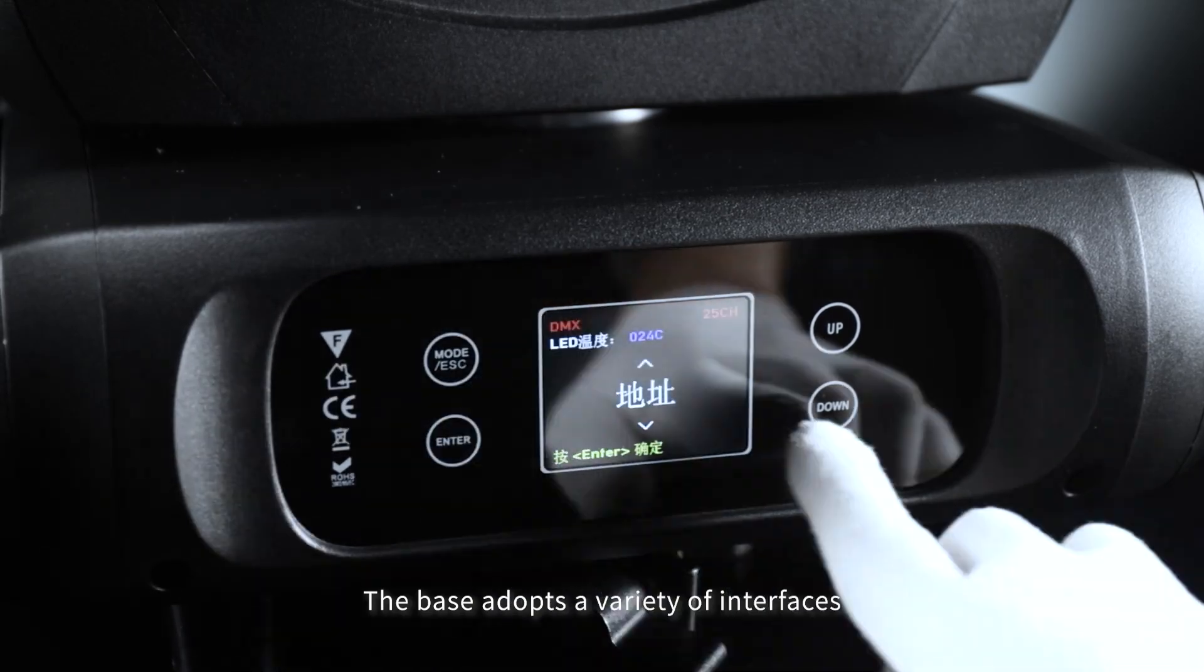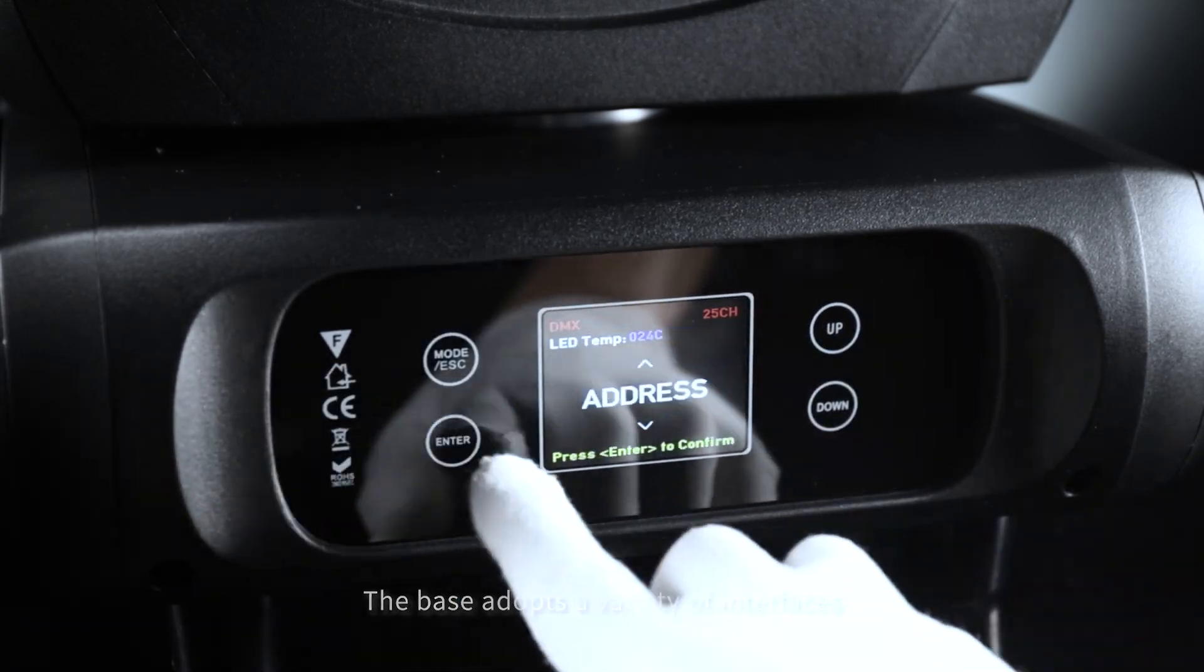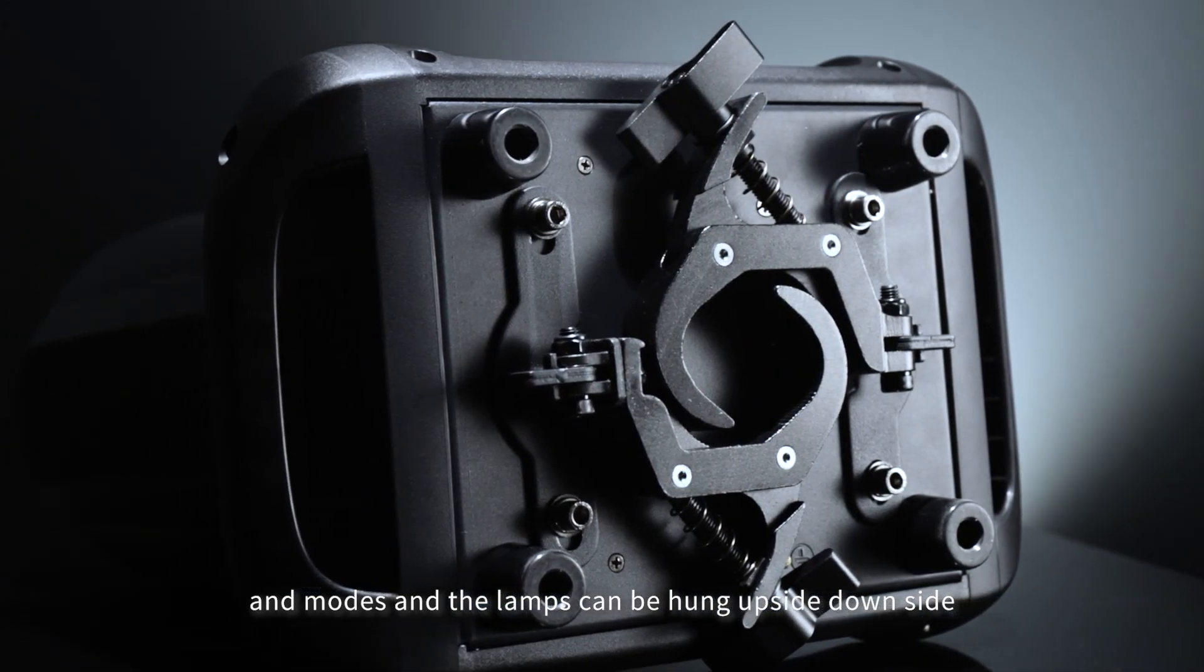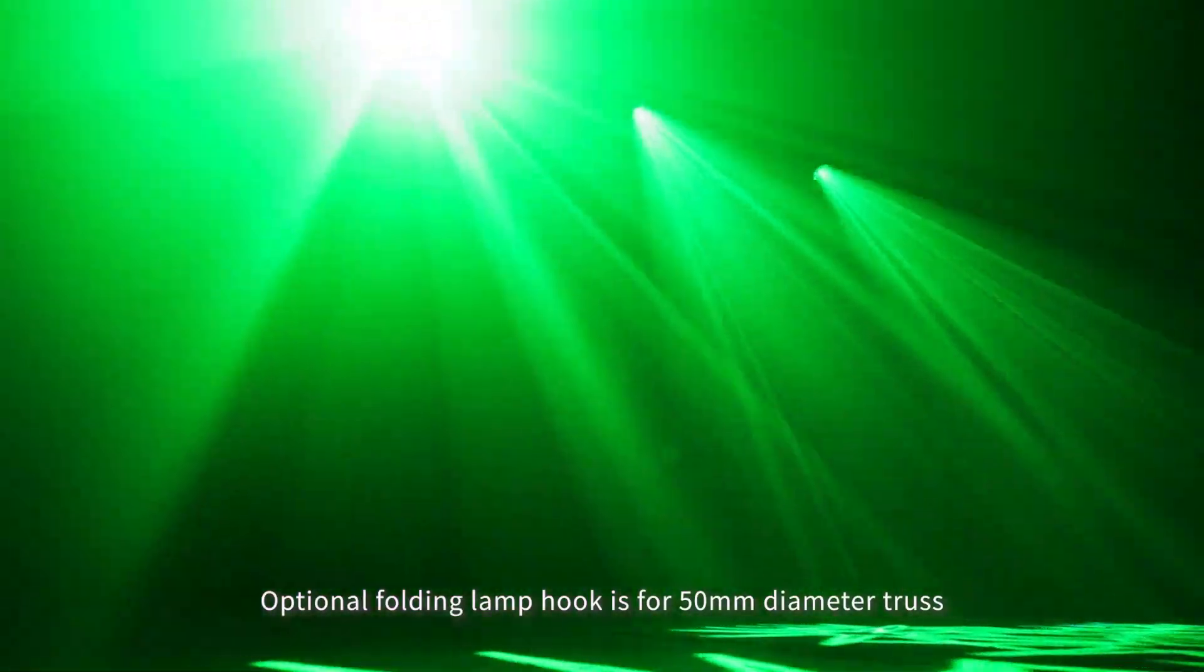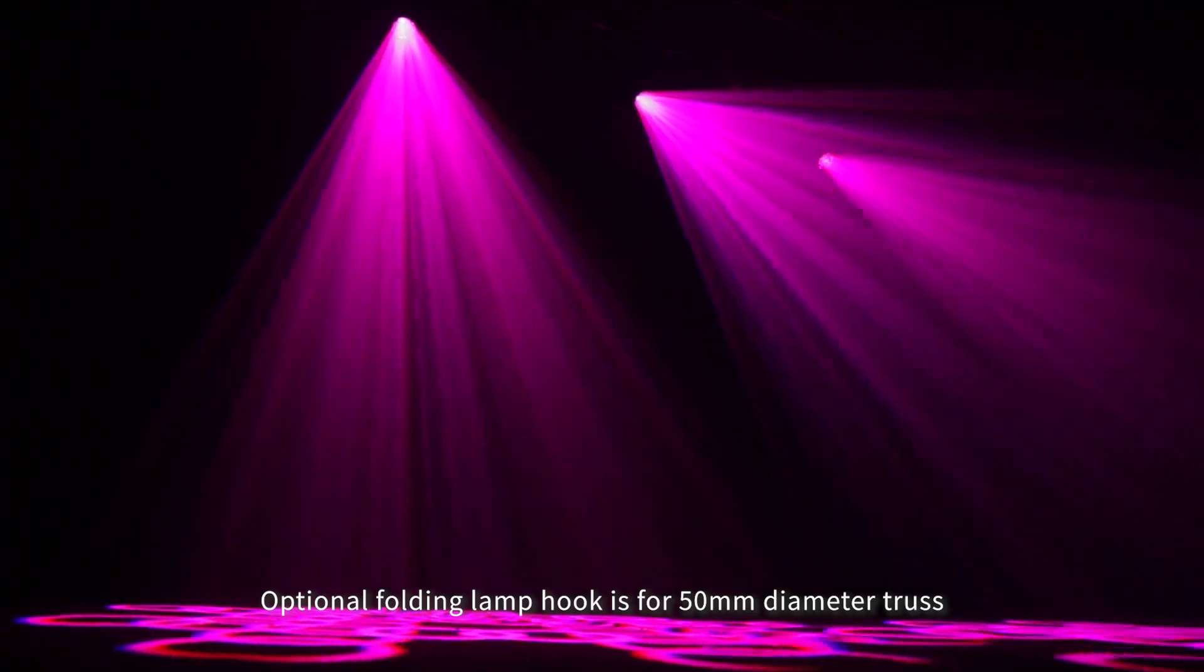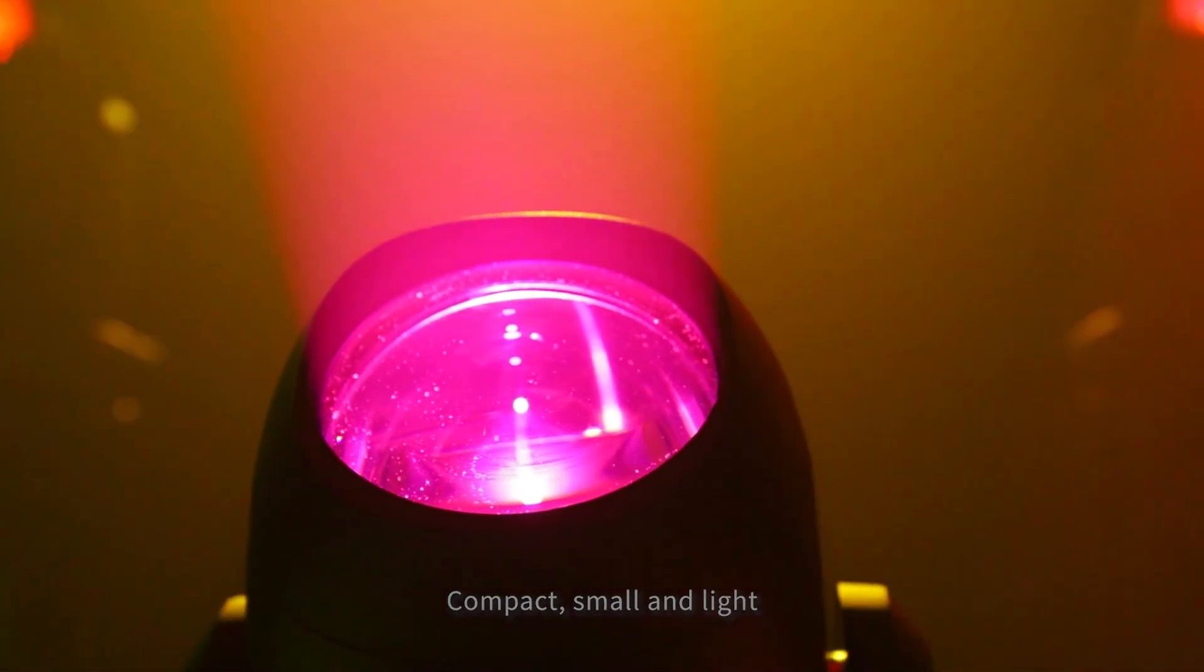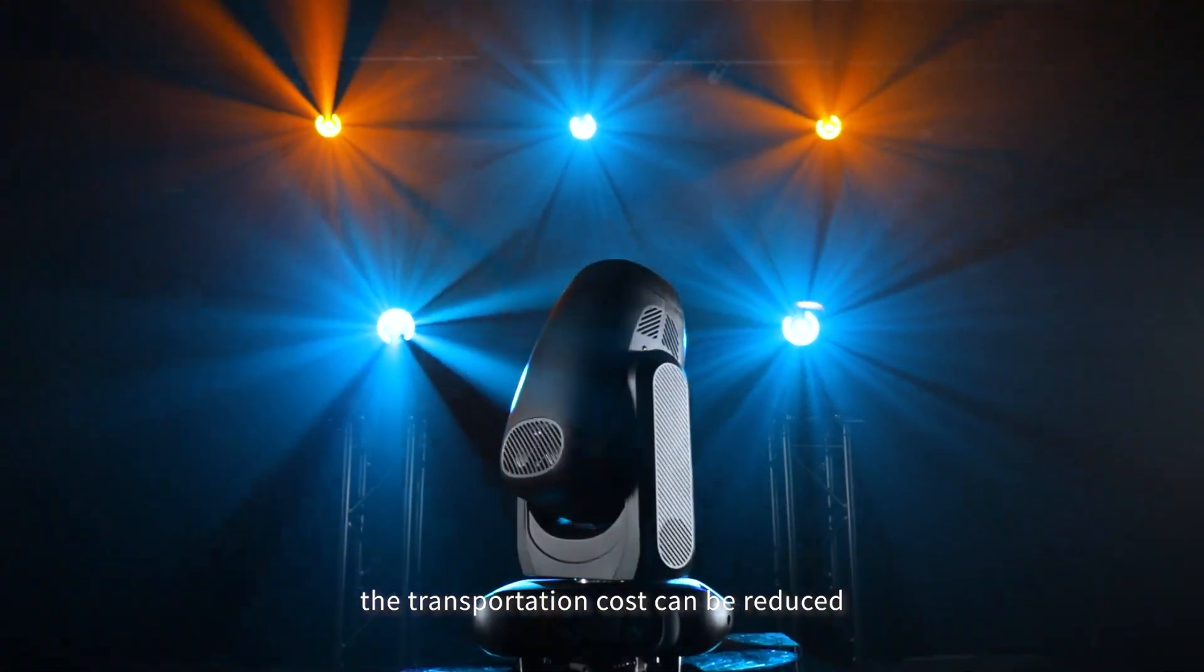The base adopts a variety of interfaces and modes and lamps can be hung upside down. Optional folding lamp hook is for 50mm diameter truss. Compact, small, and light, the transportation cost can be reduced.